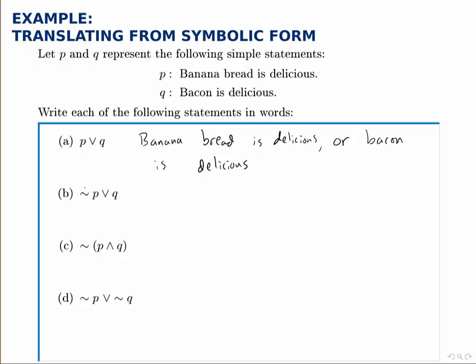For the second one, we have NOT P OR Q. So we first negate P. We could, for instance, write banana bread is NOT delicious then OR bacon is delicious. You could also say it is NOT true that banana bread is delicious or it is true that bacon is delicious and there are other variations on that, but that's the simplest form.